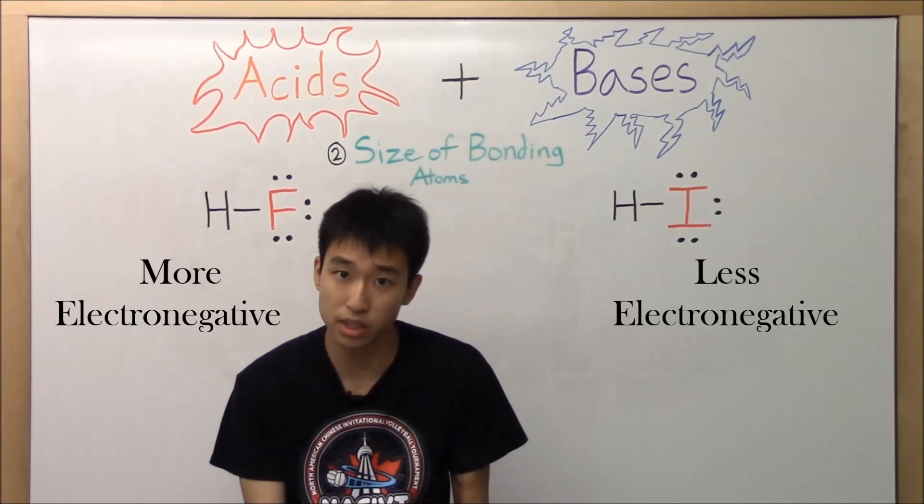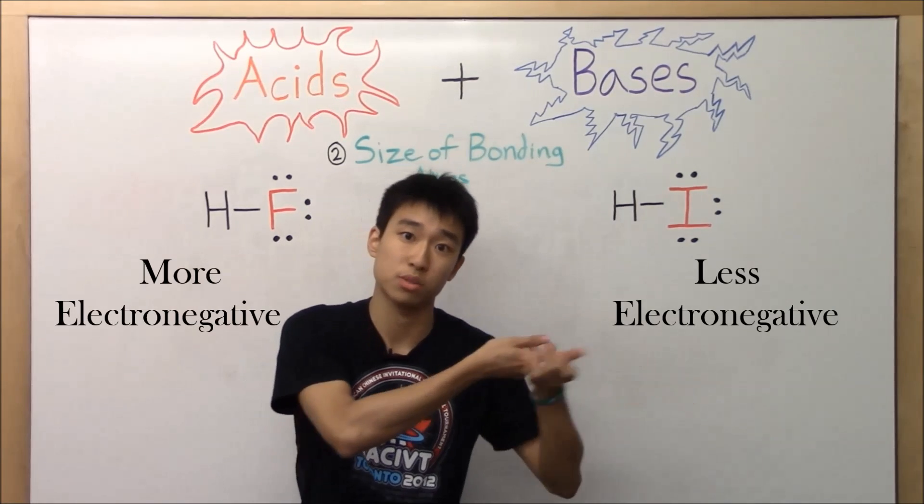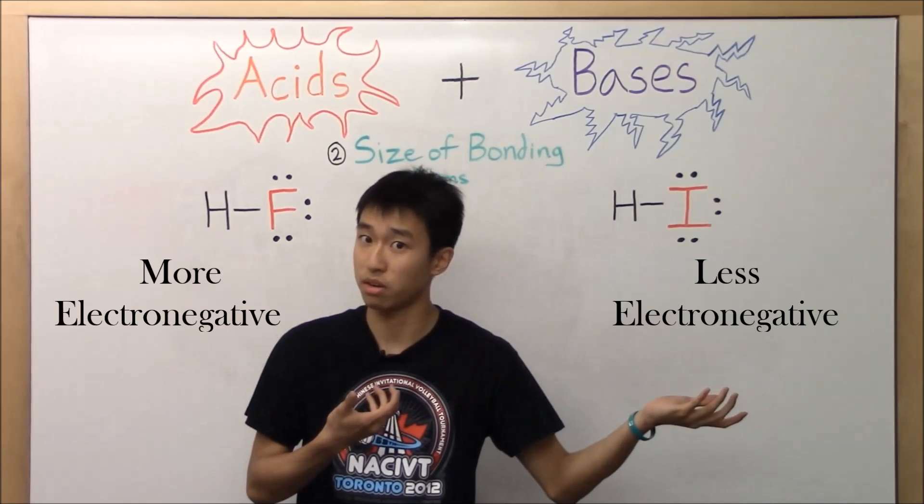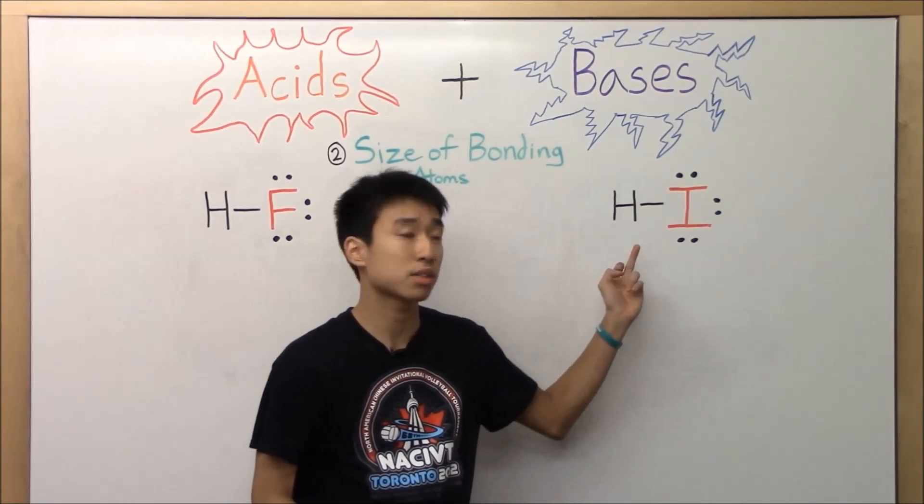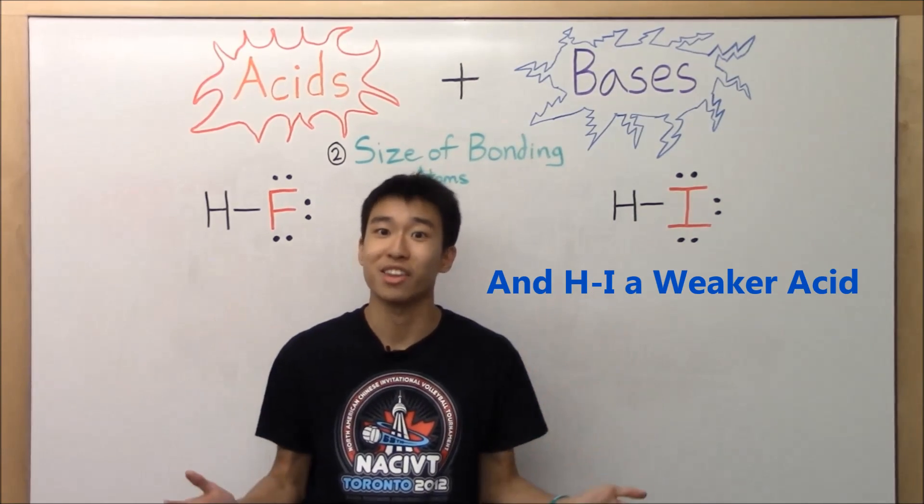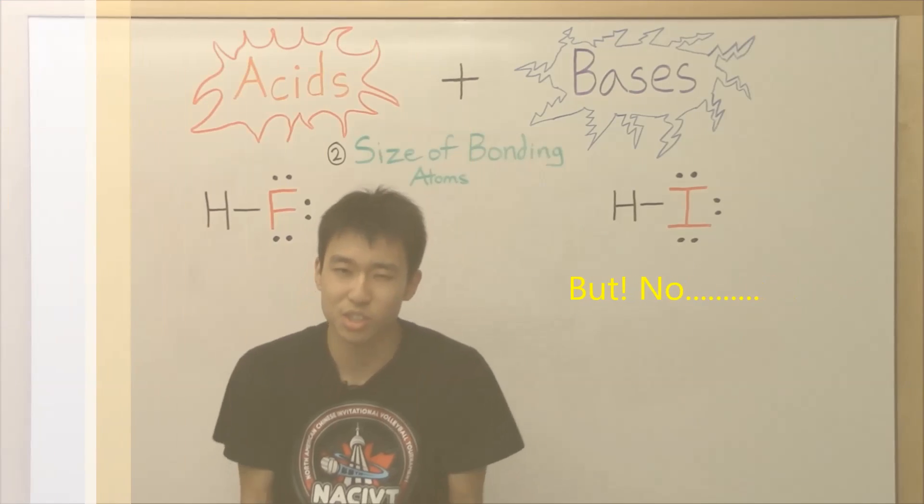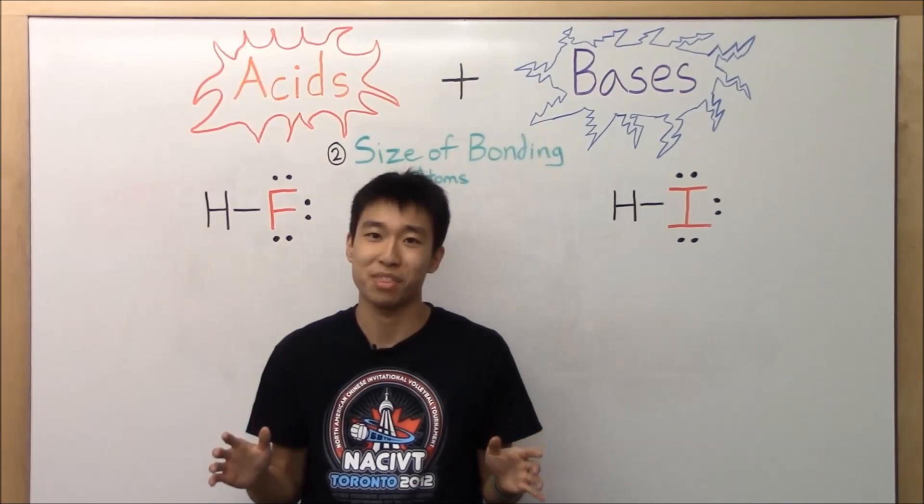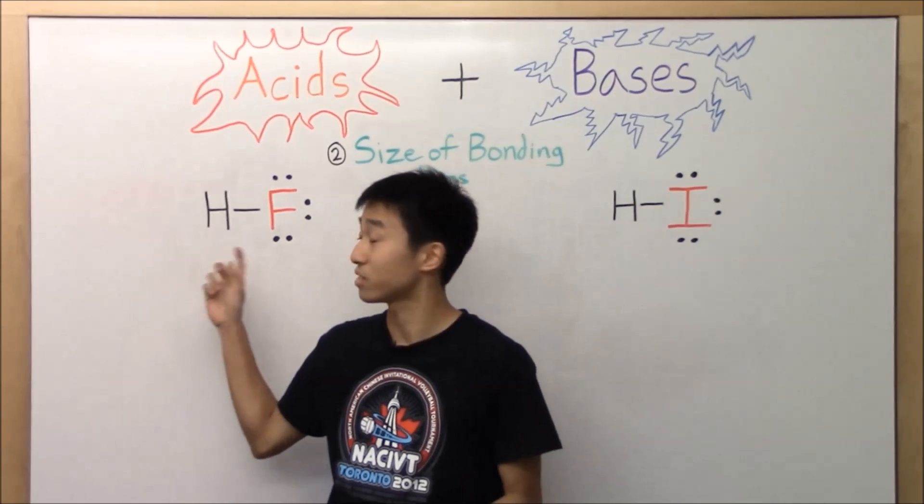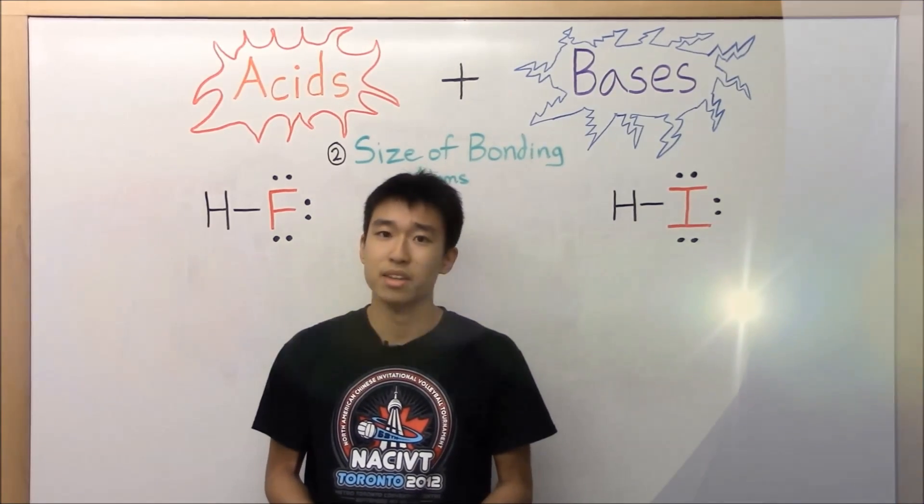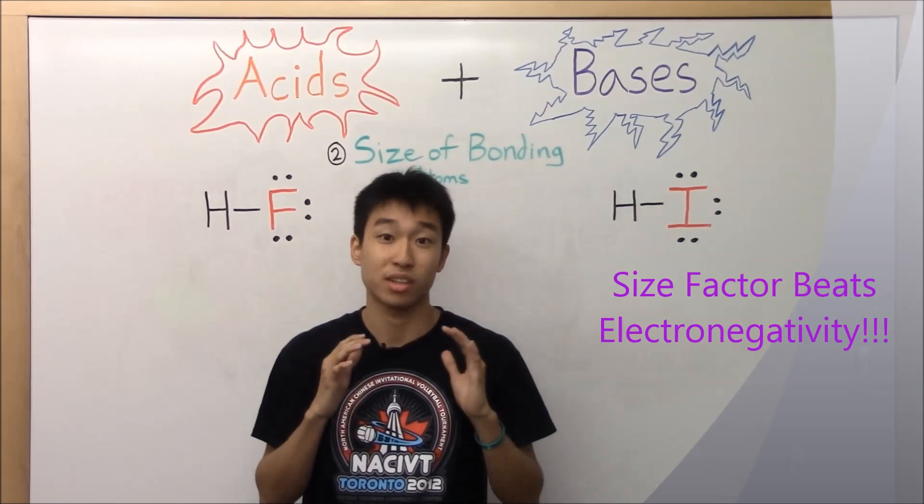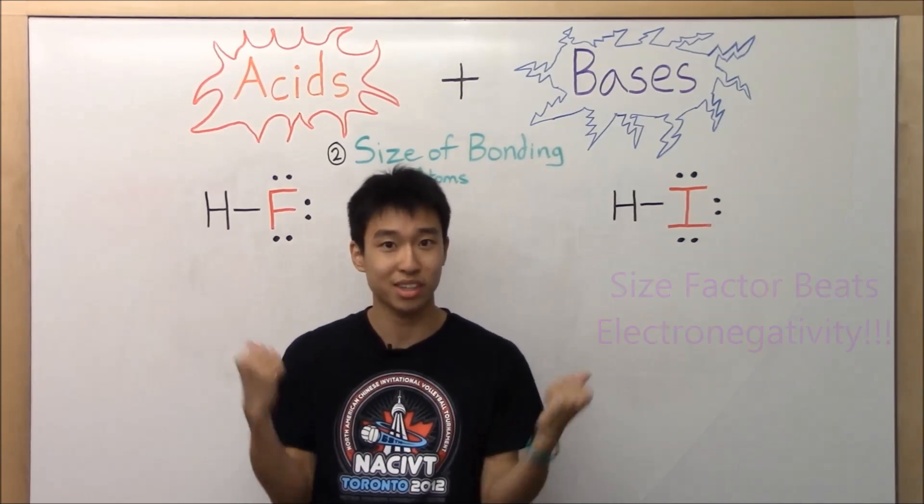So if iodine is less electronegative, that also means it's less greedy and more willing to share its electrons with hydrogen and form a stronger bond. So you would think that this bond is stronger, but that's actually not the case. Because there's such a huge difference in the size of iodine versus the size of fluorine. That factor is just so much more important than just electronegativity alone.